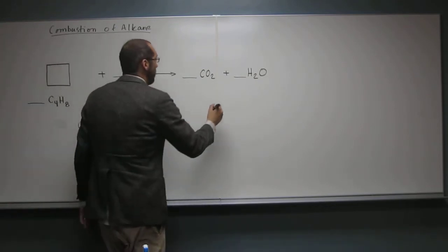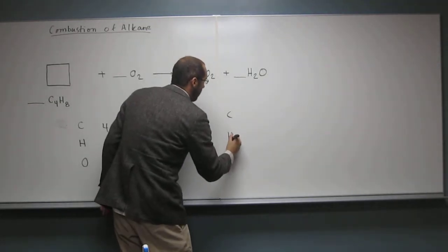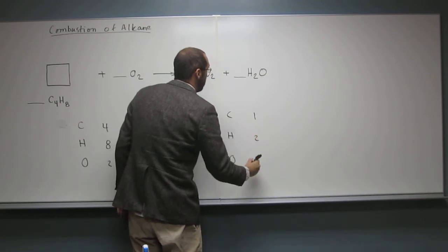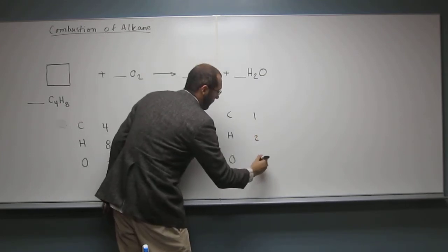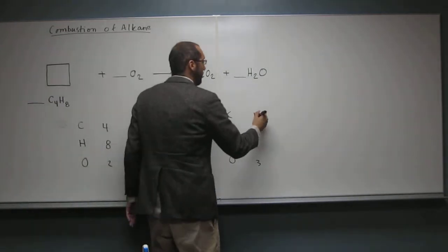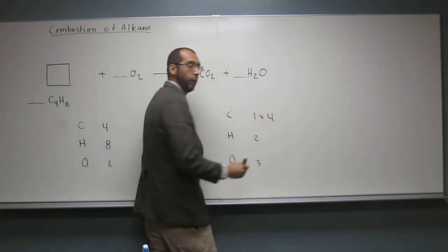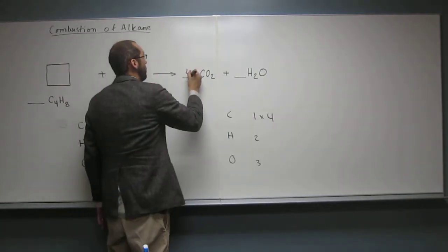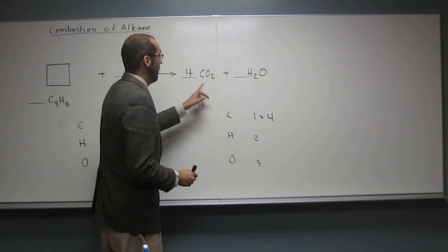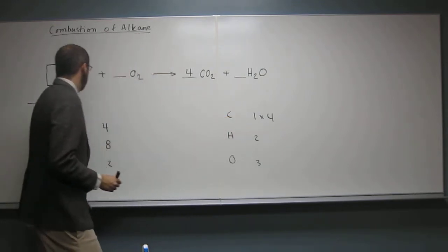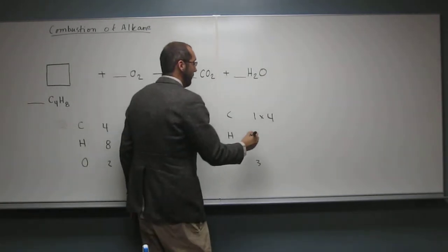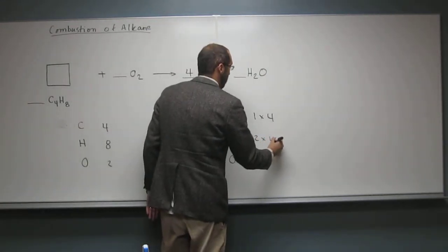So, over here we've got 1 carbon, 2 hydrogens, and 3 oxygens. Okay? So, 4 carbons to 1 carbon, so what are we going to have to do? Multiply that by 4. So, when we do that, we get 4 of those. So, when we put 4 of those, multiply that by 4.